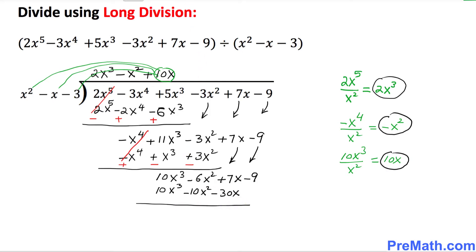We change the signs: positive 10x³ becomes negative, negative becomes positive, and the last term becomes positive. The leading term cancels, and we end up with 4x² plus 37x. We bring down the remaining term, negative 9.